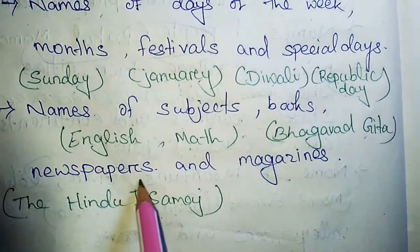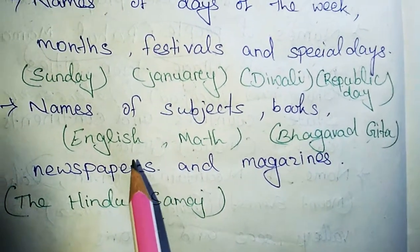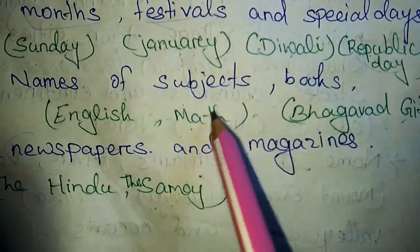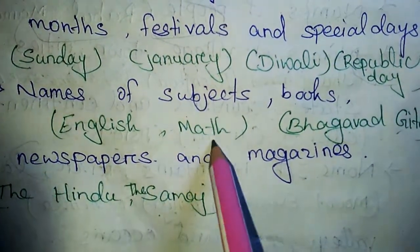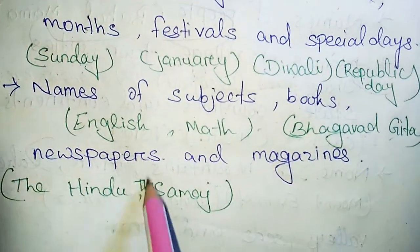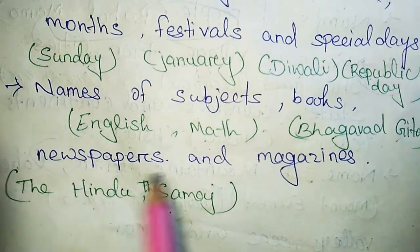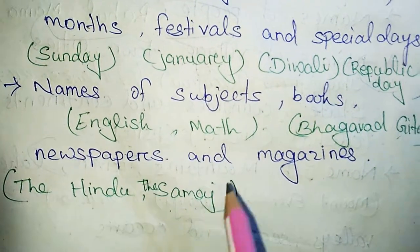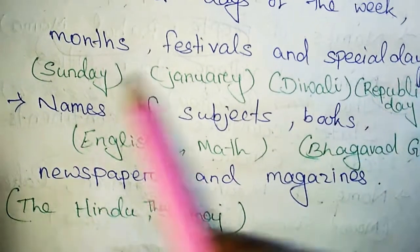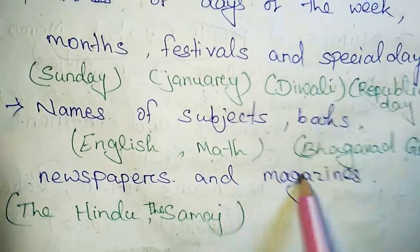Names of subjects, books, newspapers, and magazines. Here English is a subject. Math is a subject. Bhagavad Gita is a book. The Hindu, the Samaj are newspaper names. These are all names, and all are called proper nouns.